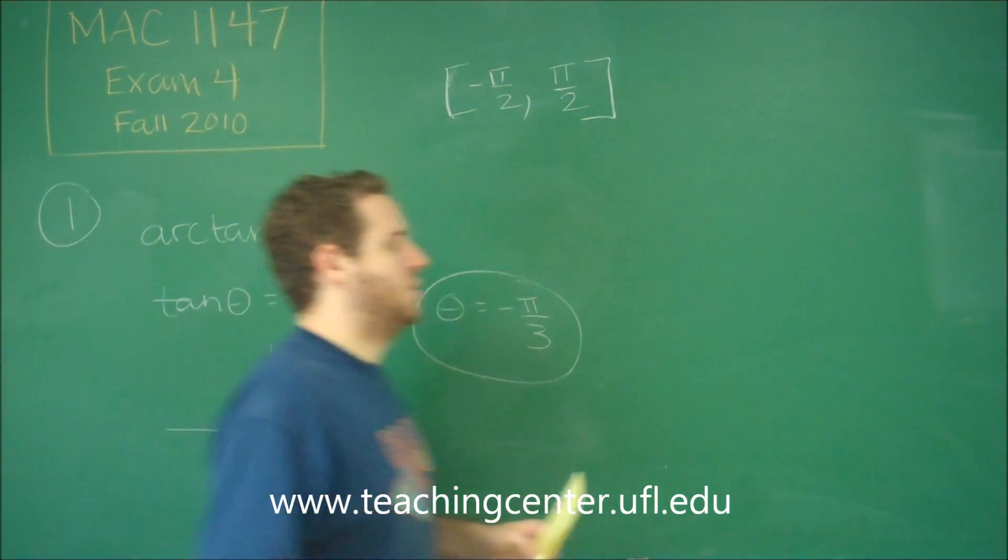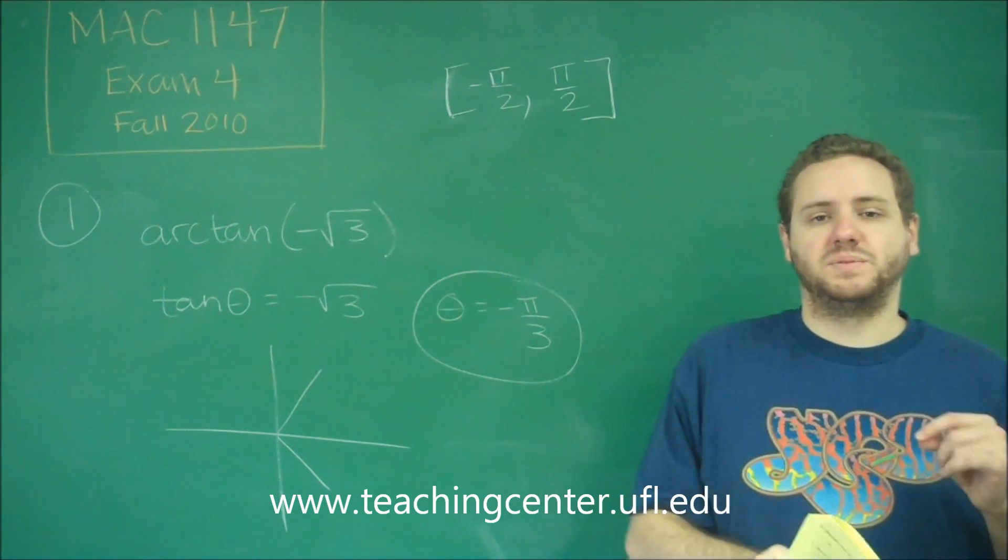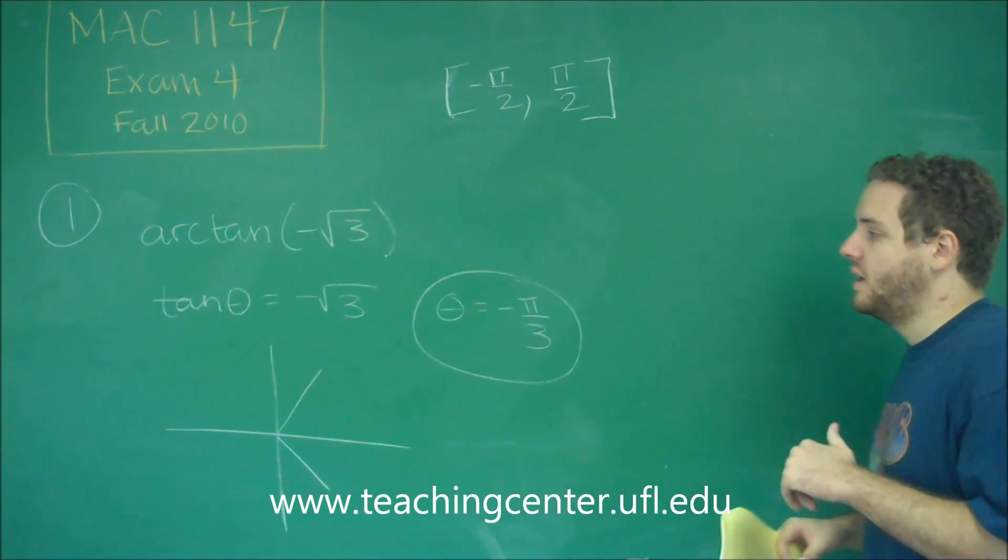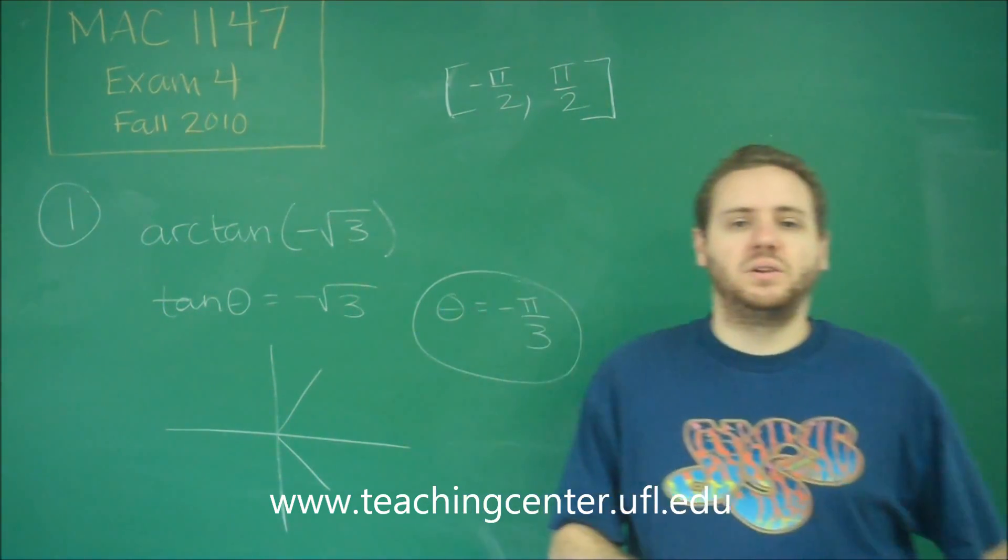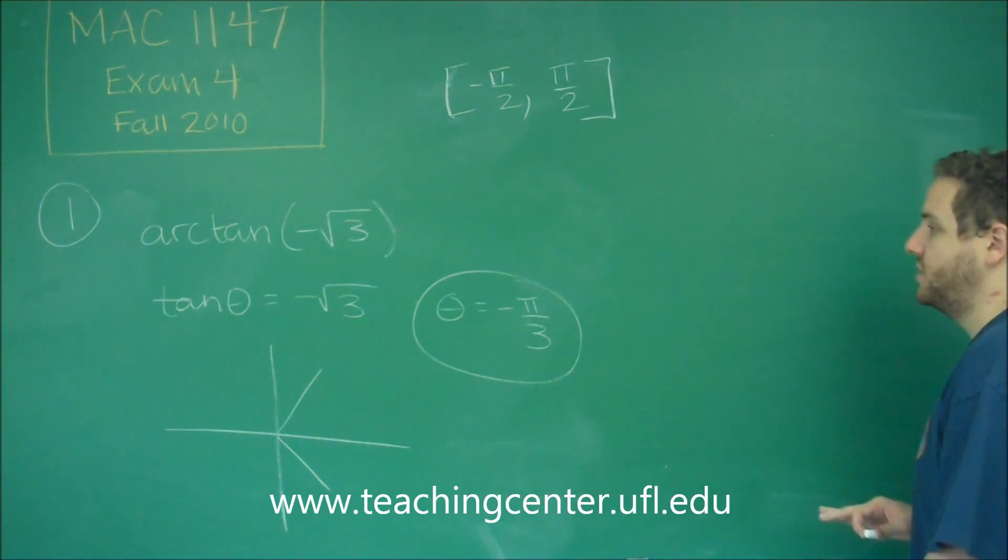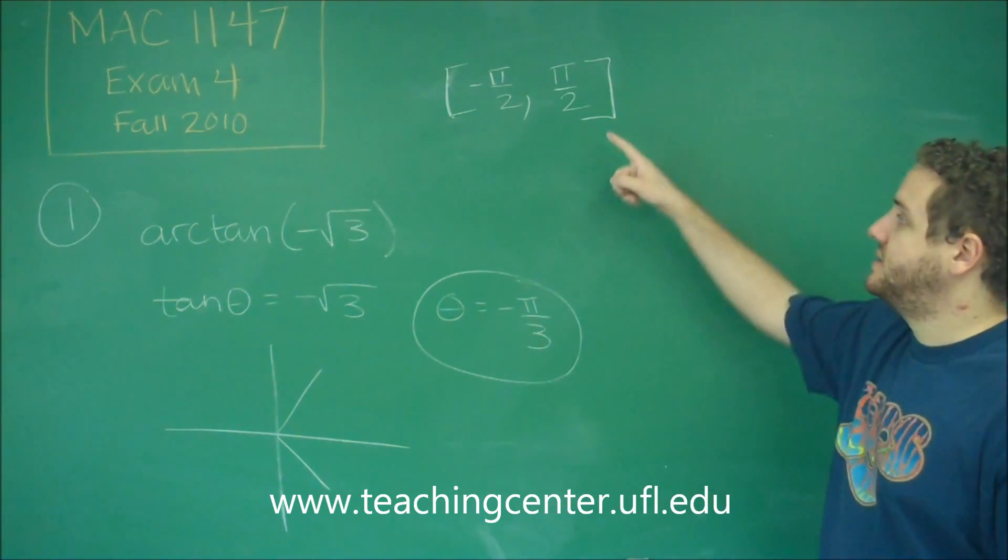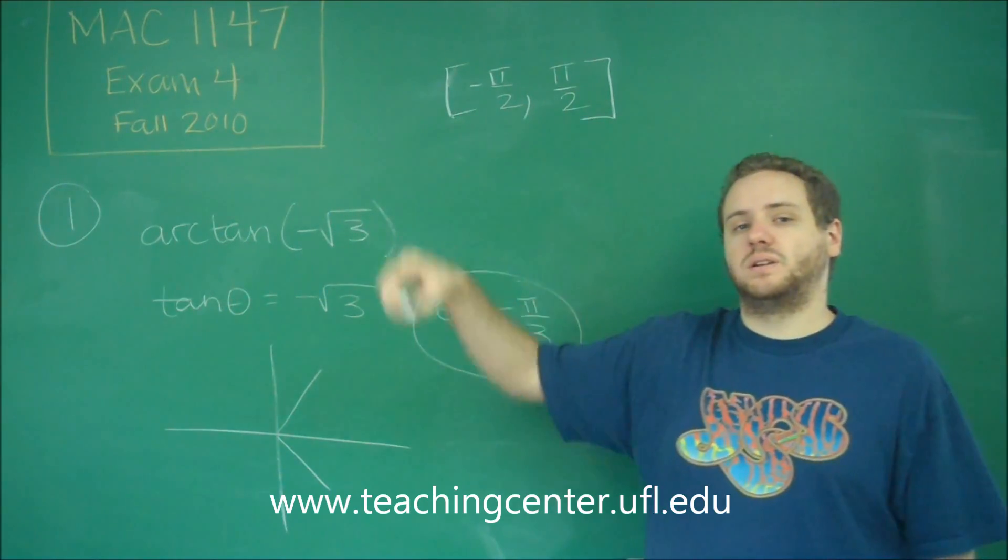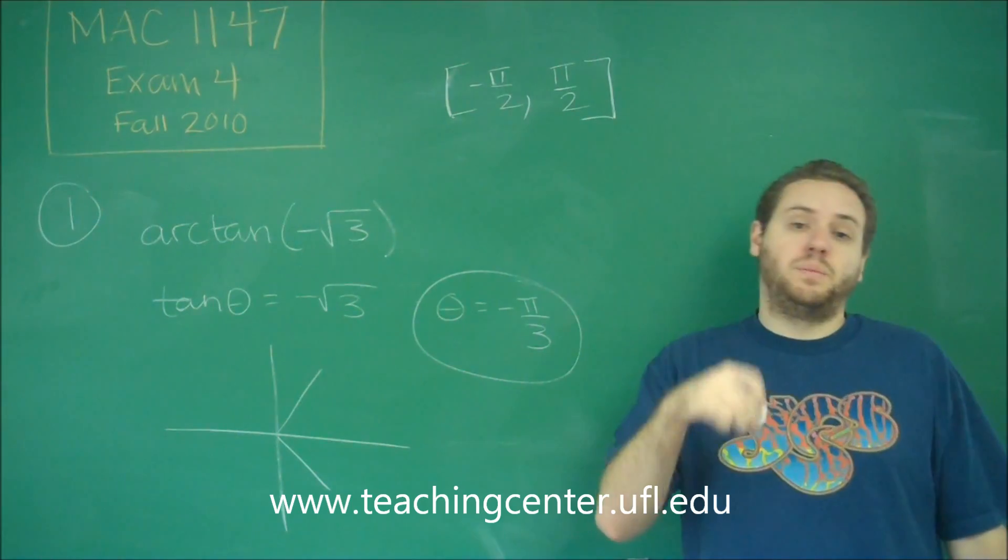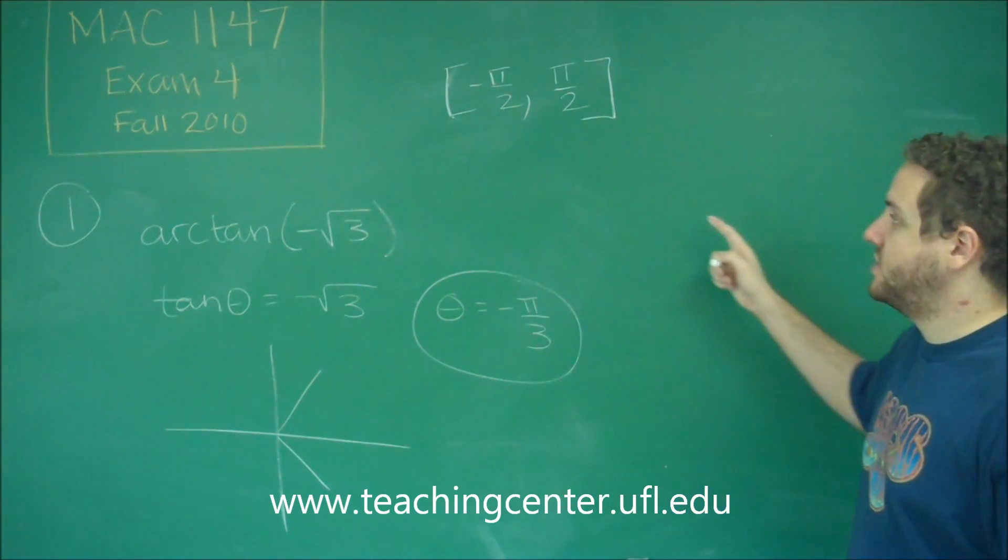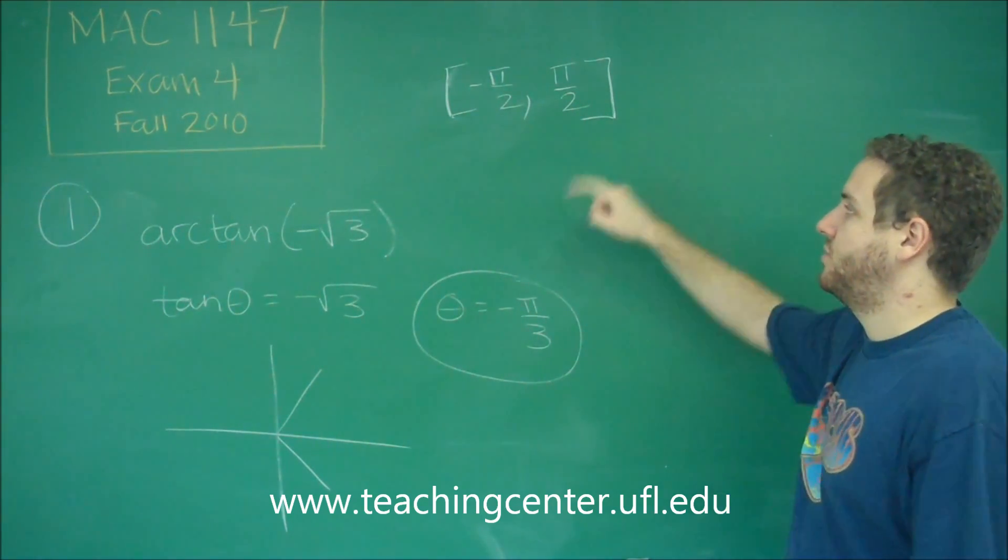So remember that for an inverse trig function, you need to recognize that the ranges of it are very specific values. And always just use the reference angle and then choose the correct quadrant. The only thing that you need to be careful of is that when you're dealing with arctan and arcsine, the fourth quadrant is the negative values of the angles. And a lot of other problems when you do the unit circle, the fourth quadrant is three pi over two to two pi. For these arc functions, you just consider them negative so that you can have your interval as one thing.